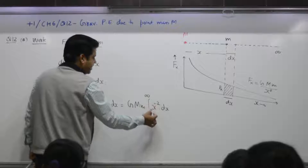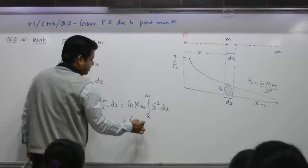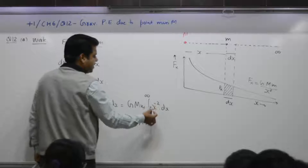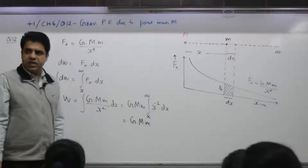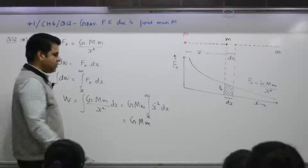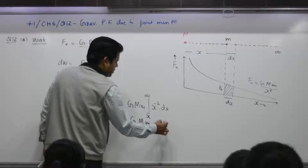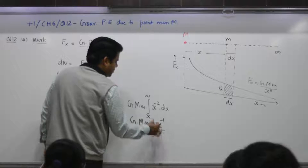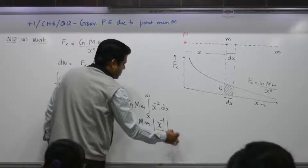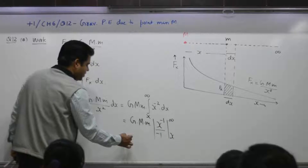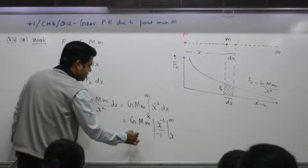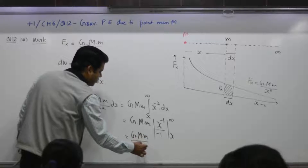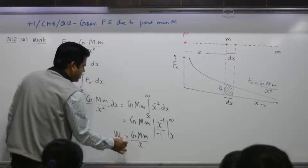What is the integration of x to the power minus 2? Using the formula, integral of x^n is x^(n+1) over (n+1). So x^(-2) integrates to x^(-1) over (-1). Applying limits — lower limit x, upper limit infinity — work done comes out to be GMm over x.